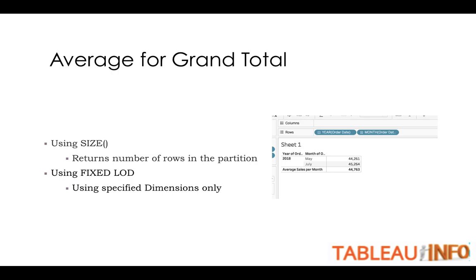Today we have an interesting topic: how to get average for grand total. You might be aware of the grand total where you simply sum from top to bottom, but I don't want that. I want to have average, or for example, I want to get maximum. You can see the image over there.